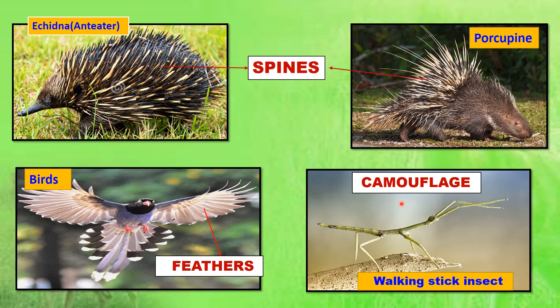Some predators also camouflage so that their prey cannot see them easily. For example, a walking stick insect looks like a stem, and the chameleon also shows camouflage.